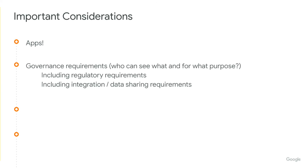Governance requirements are also very key. Obviously, you have to follow through with legal and regulatory requirements. And if you have any need to share data with a team that is not allowed to see the other data, then without a feature like subproperties, you would not be able to achieve that goal. So governance requirements are the second major consideration you'll want to think about when creating a property.